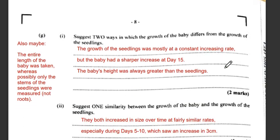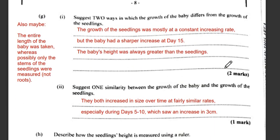The question asks for two ways the growth of the baby differs from the growth of the seedling. One way is that the growth of the seedling was a mostly constant increase rate, whereas the baby showed a sharper increase especially around day 15. Also, the baby's height was always greater than the seedling's. The baby's total length was measured, whereas the seedling measurement may have only included the stem, not the roots.